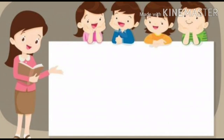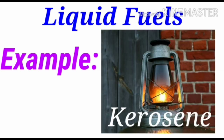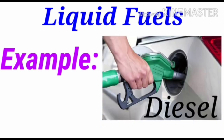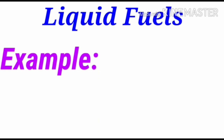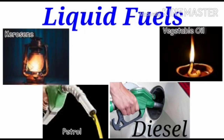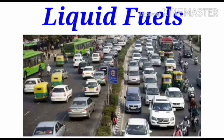The second one is liquid fuels. The fuels which are in liquid state are called liquid fuels. For example, kerosene, petrol, diesel, and vegetable oil. These things can be burnt while heating. These are used in vehicles.